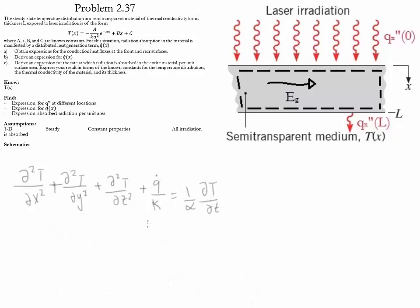The second part of the problem asks us to calculate the amount of heat generated within the material. We start with the heat conduction equation. Since the problem is one-dimensional, we eliminate the second derivatives with respect to y and z. Since the problem is steady, we eliminate the time derivative term. Therefore, the equation becomes k d²T/dx² plus q̇ equals zero.